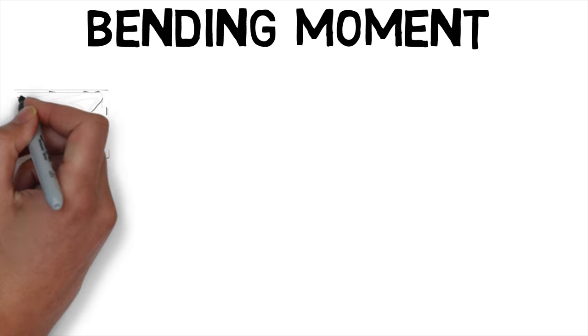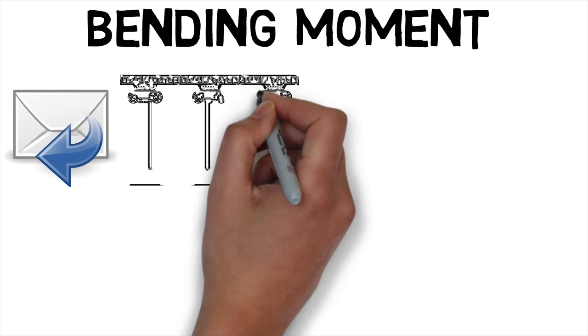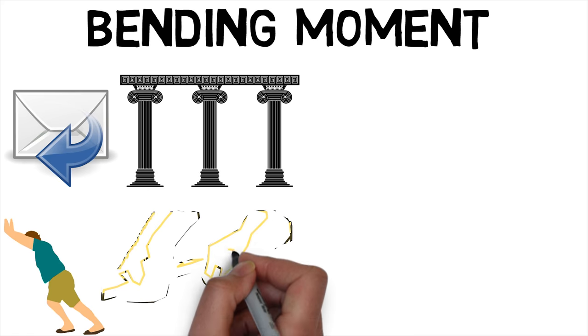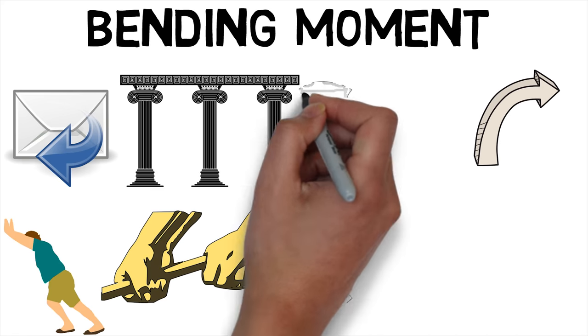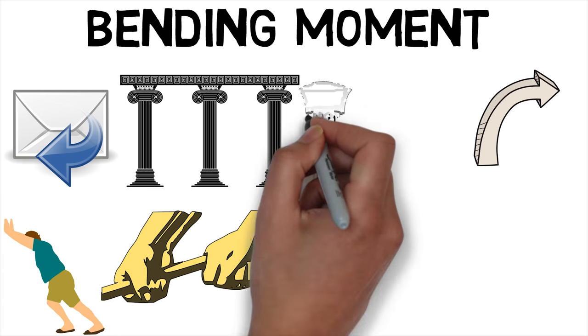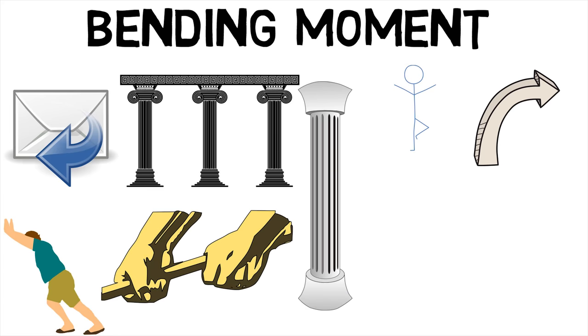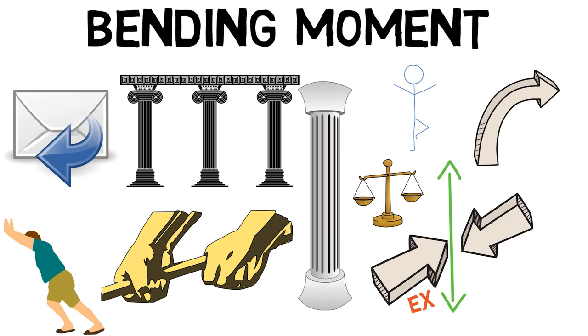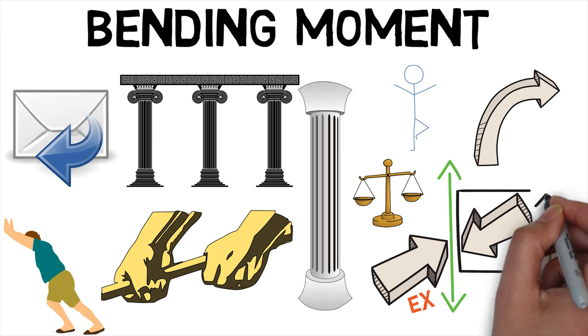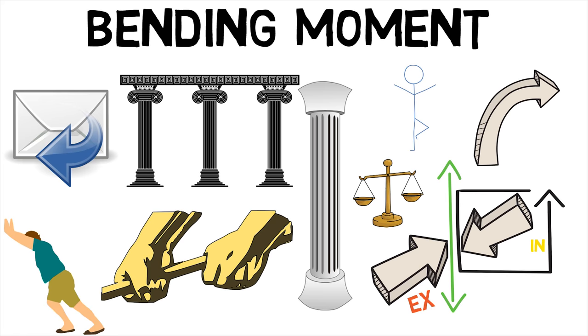A bending moment is the reaction induced in a structural element when an external force or moment is applied to the element, causing the element to bend. The most common or simplest structural element subjected to bending moments is the beam. For equilibrium, the moment created by the external forces and external moments must be balanced by the couple induced by the internal loads. The resultant internal couple is called bending moment.